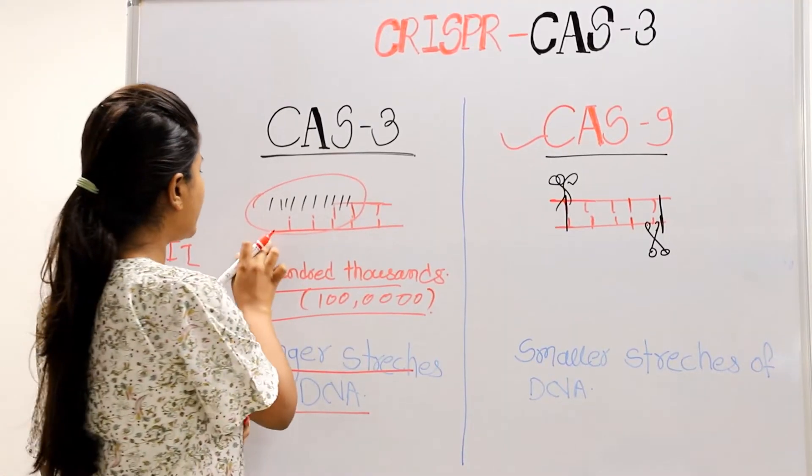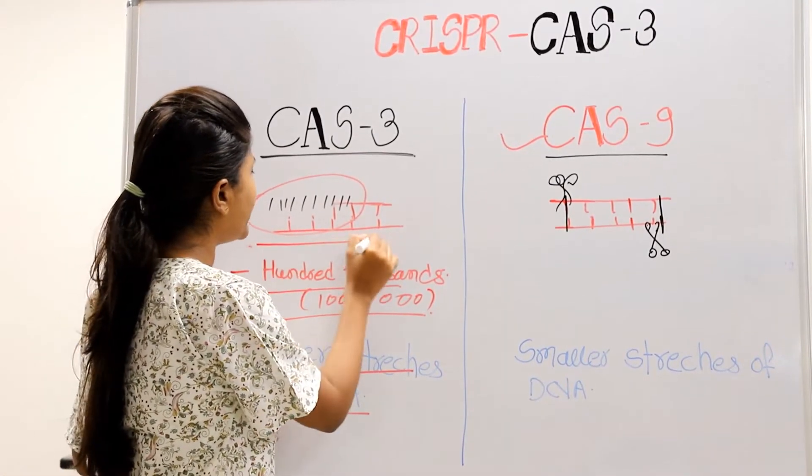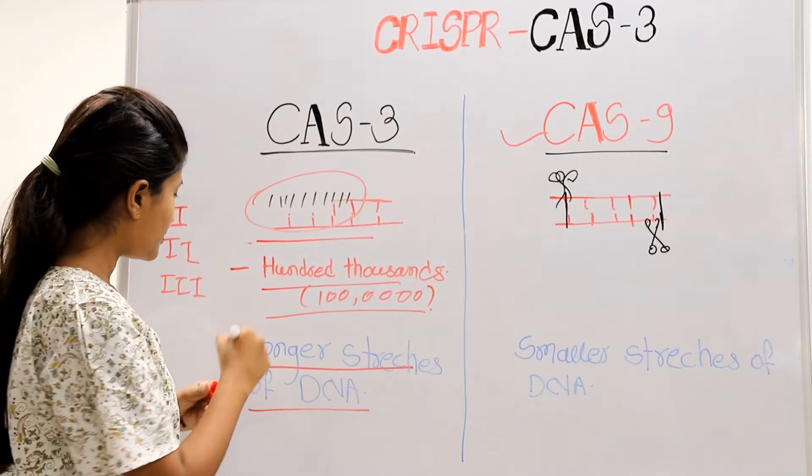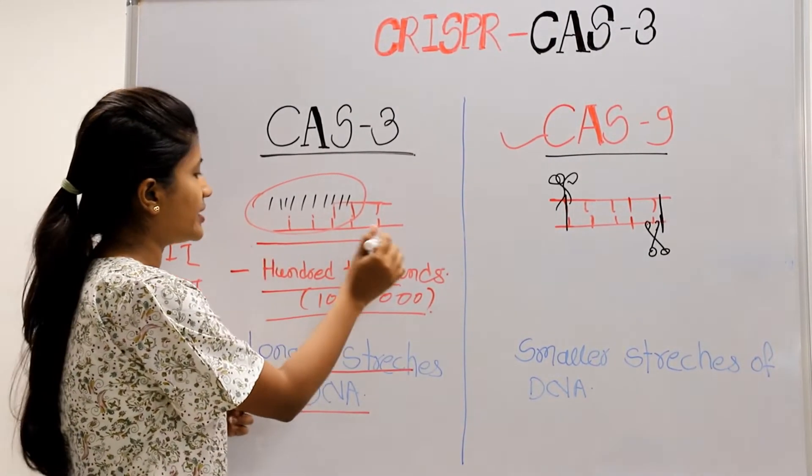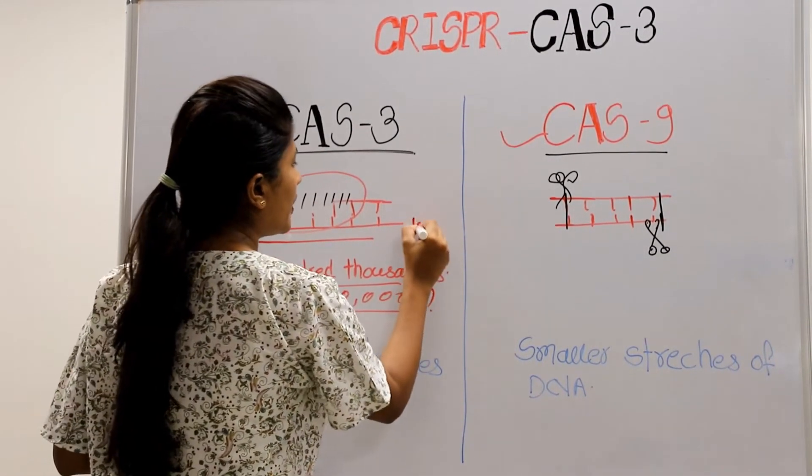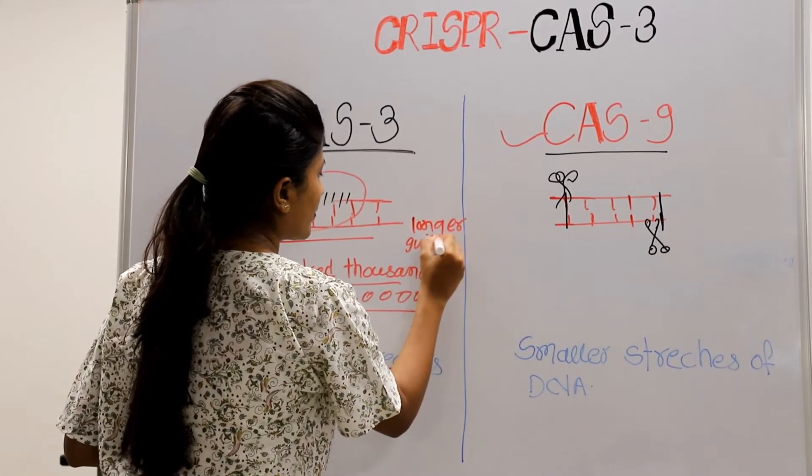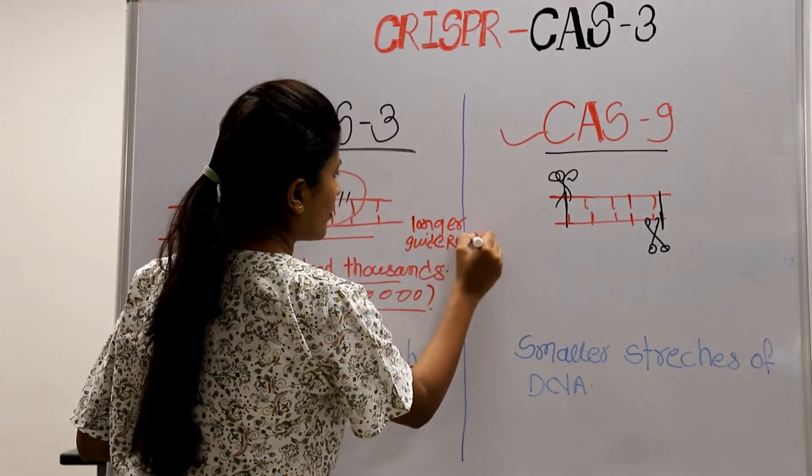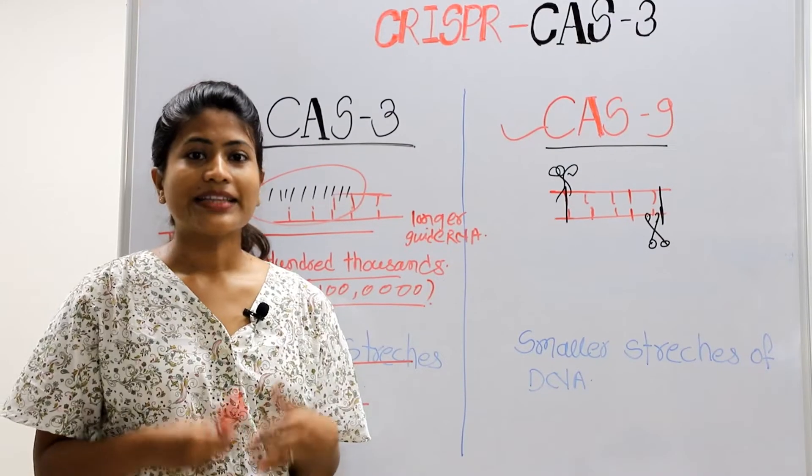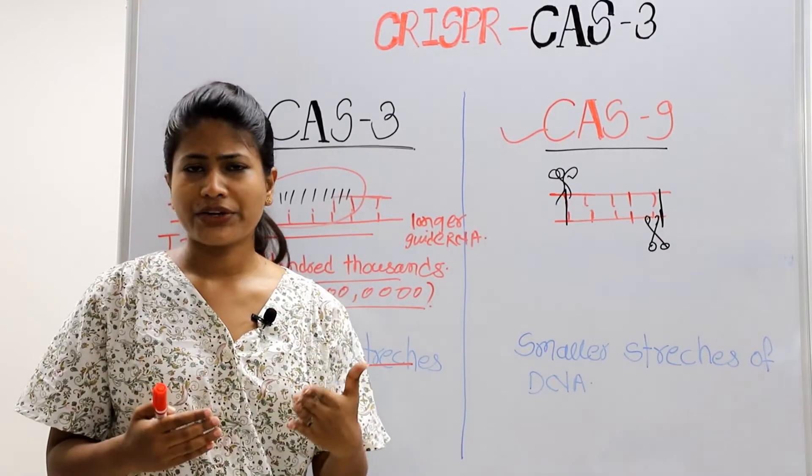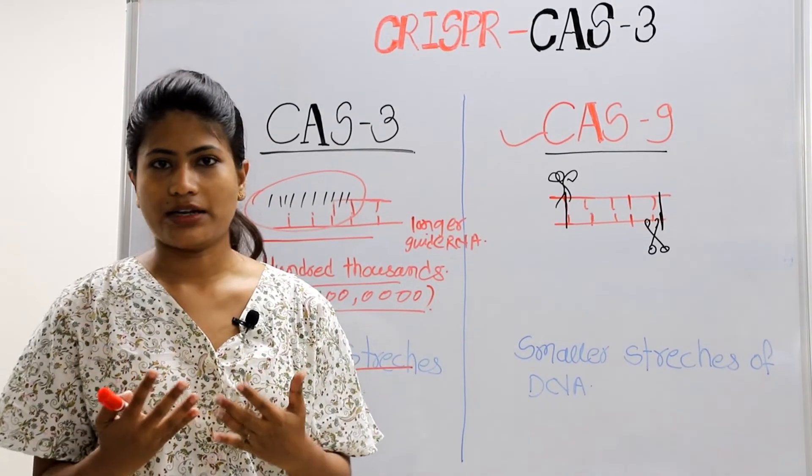It cuts the DNA into smaller fragments because it uses longer guide RNA. That means it's better and more accurately locating the chunks we want to target.